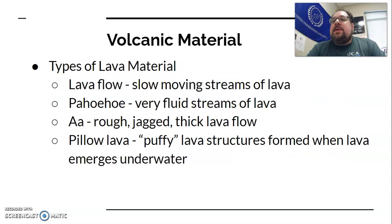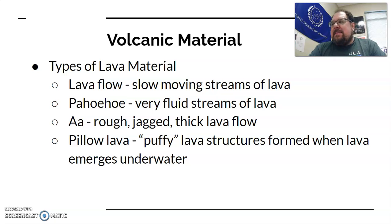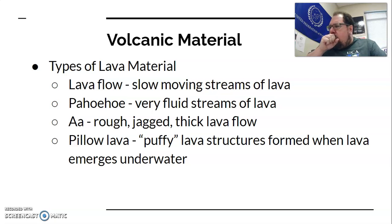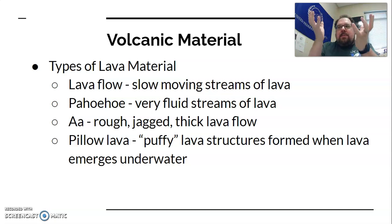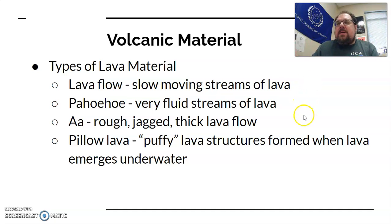There are different types of lava flows. A lava flow is a slow-moving stream of lava. Pahoehoe — many of these names are Hawaiian — is very fluid, very runny lava that comes quickly; you don't want to try to outrun pahoehoe. Aa is a rough, jagged, very thick lava flow. Pillow lava forms whenever lava emerges underwater — it puffs up as it solidifies and cools, making round modules that look like pillows.